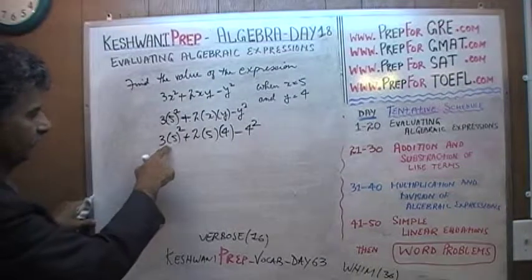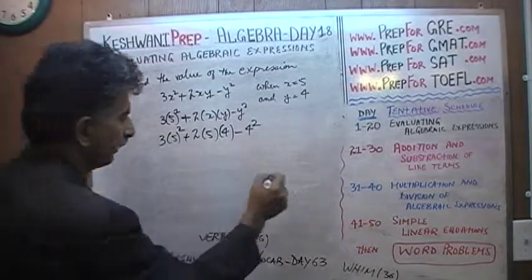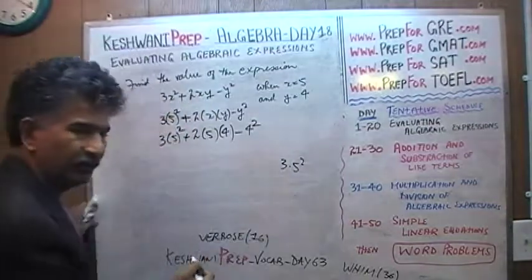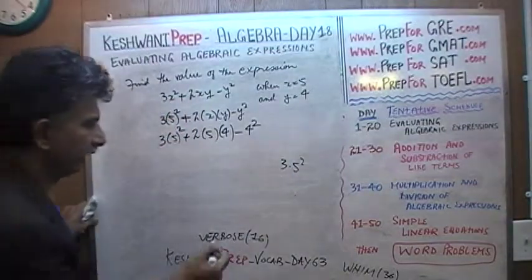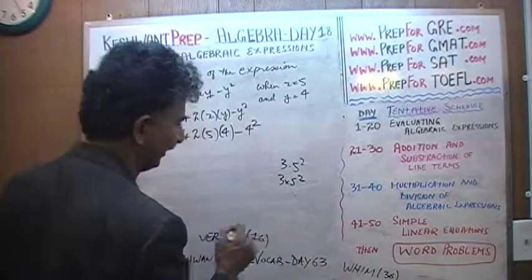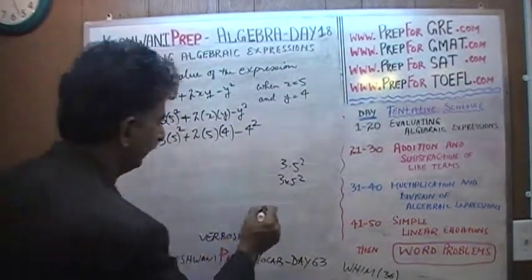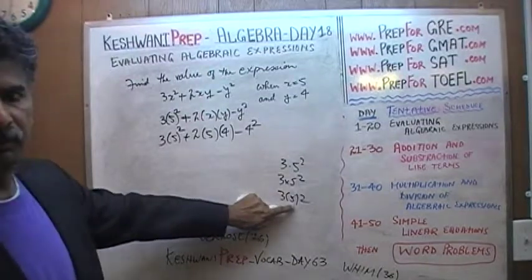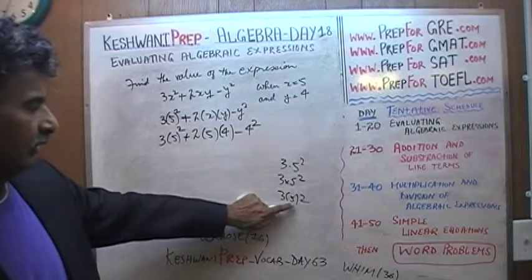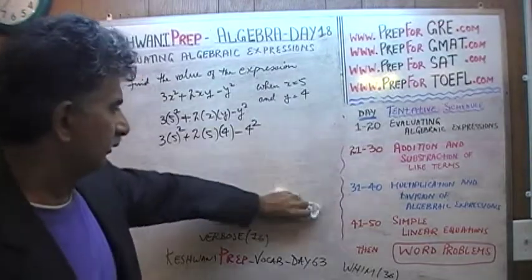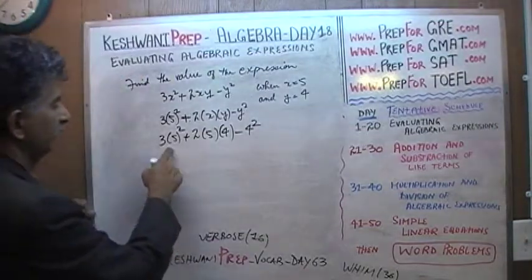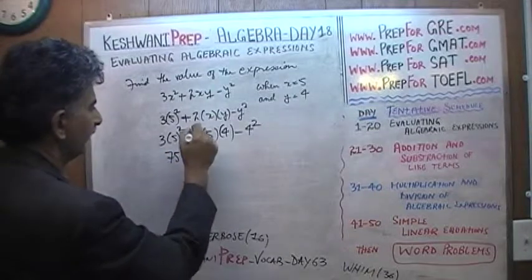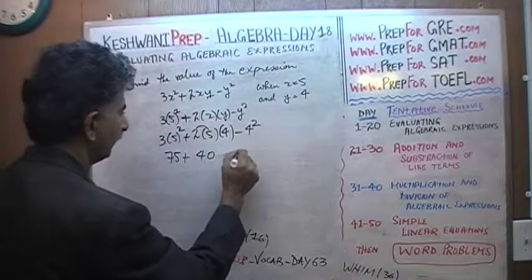I also put parentheses around 5 to separate it from the 3 — we don't want it to look like 3.5 squared, which is very confusing. It's just a matter of preference; some people use a multiplication sign, I prefer parentheses. So: 5 squared is 25, times 3 is 75. Plus 2 times 5 is 10, times 4 is 40. Minus 4 squared which is 16.